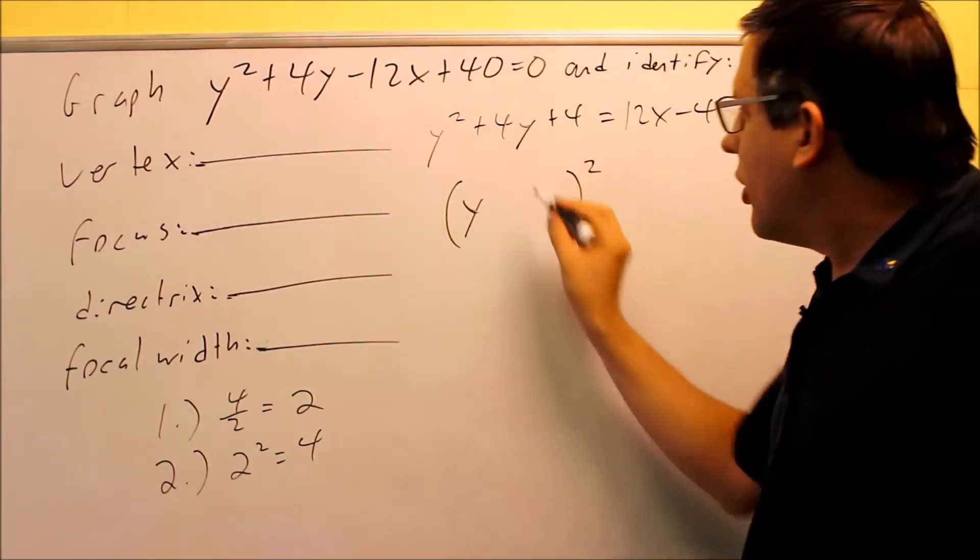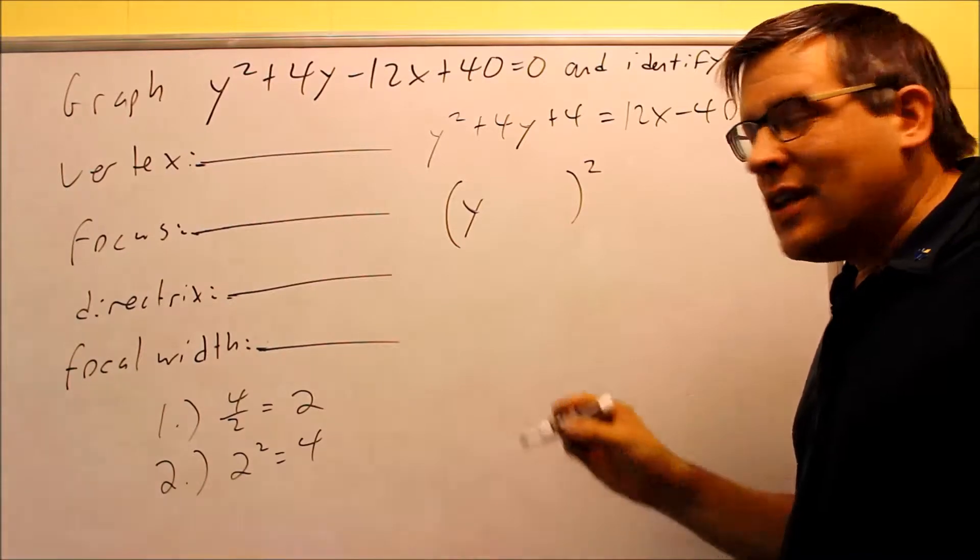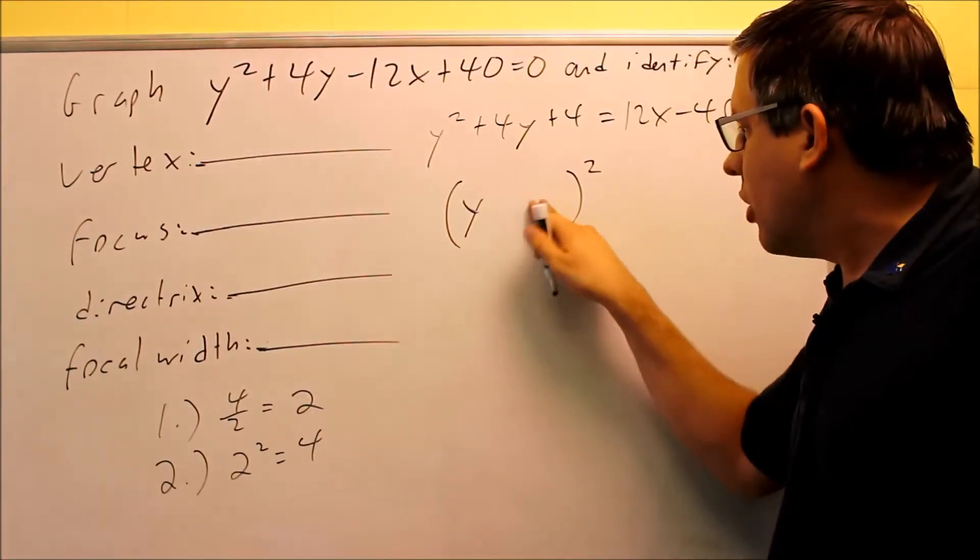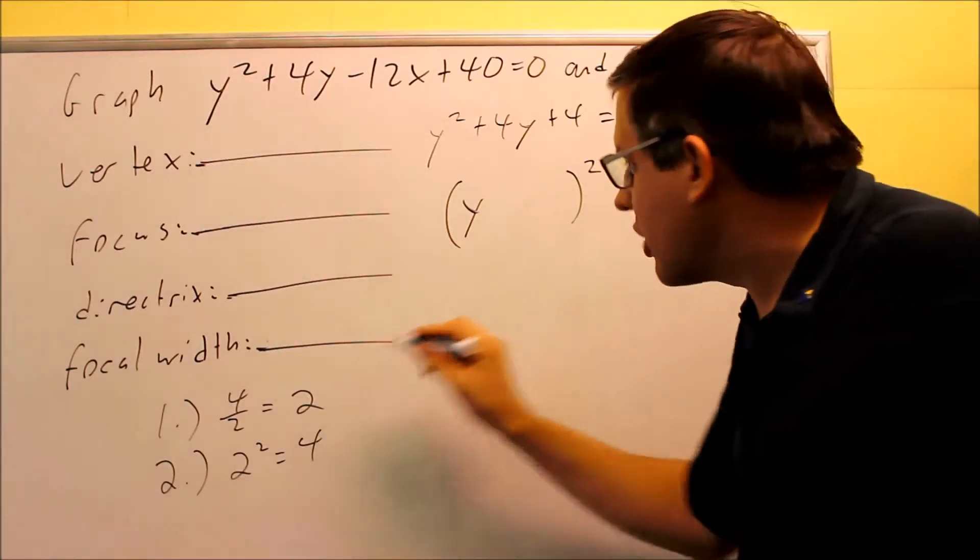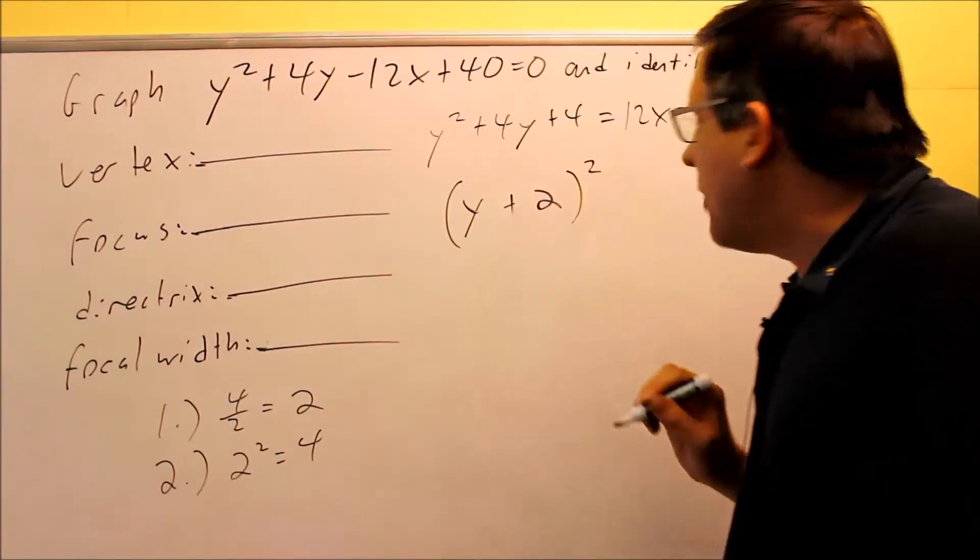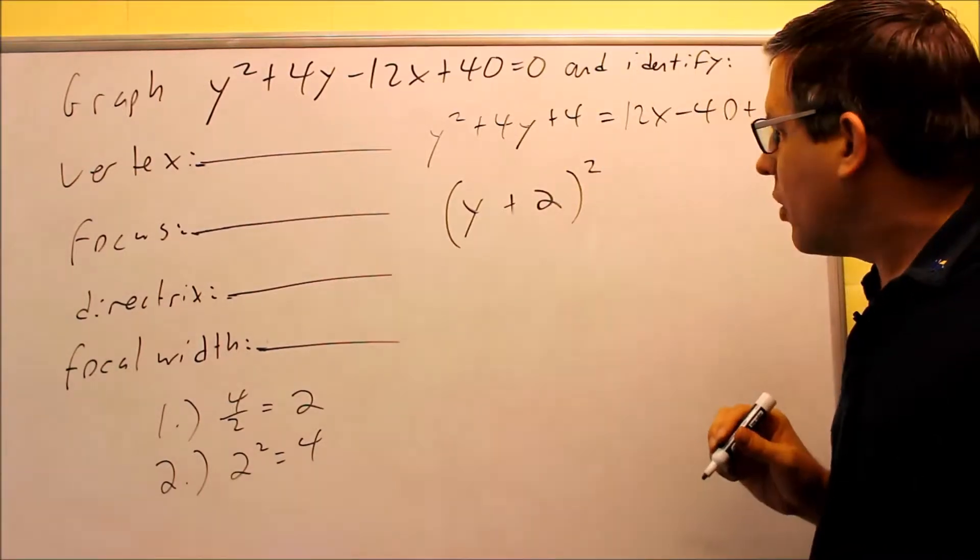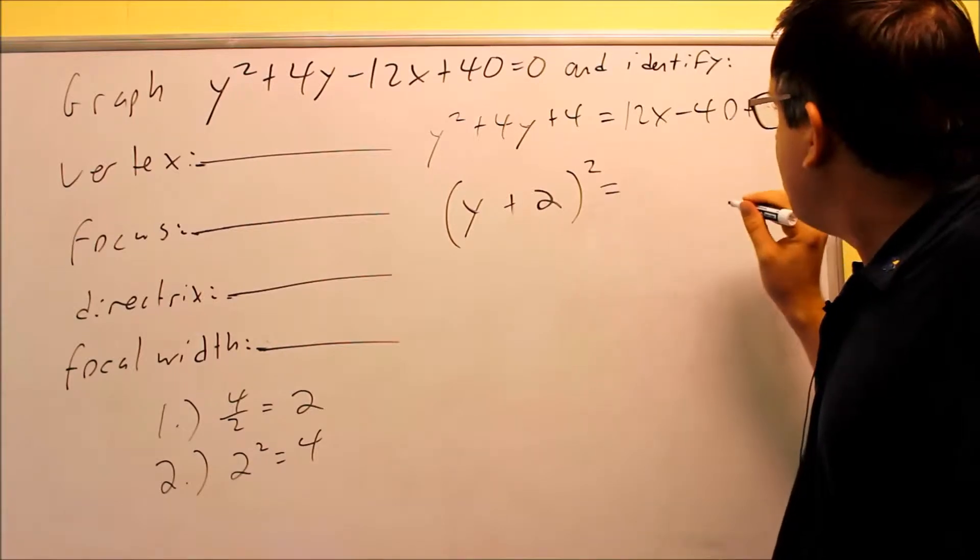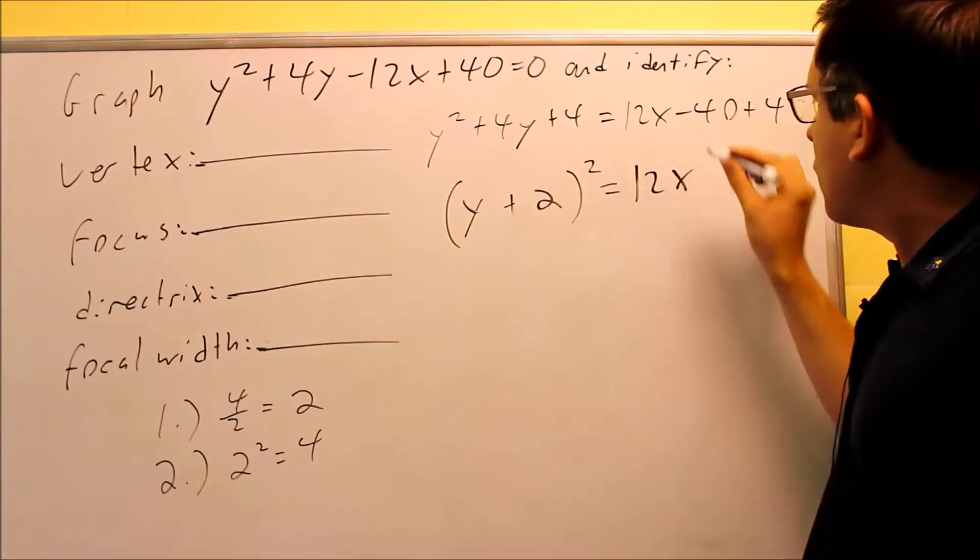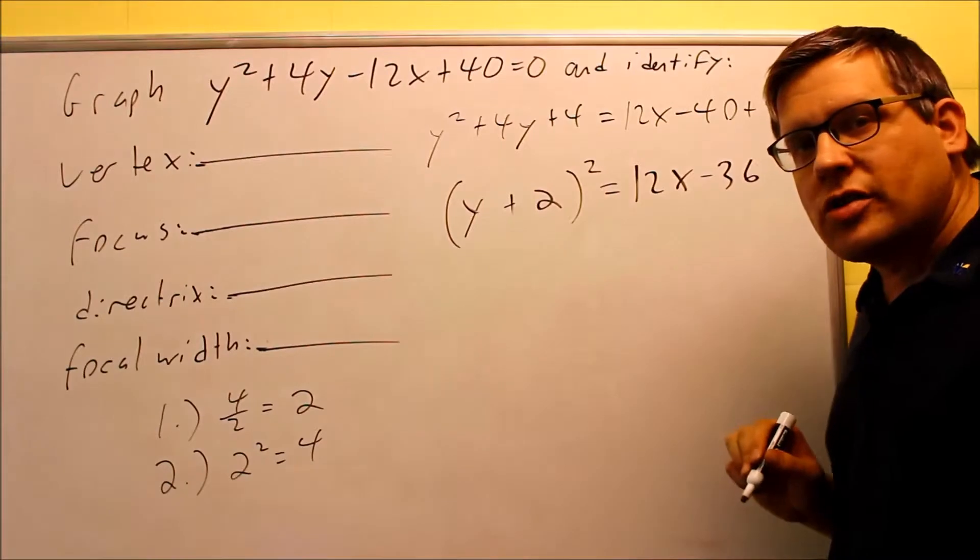Now the y is the variable that's in this one. The answer you get for step number 1, that's what goes inside the blank here. So because I got a 2, I have y plus 2 is going to go inside the parenthesis. On this side, I'm going to clean this up. I have 12x and this is going to give me minus 36.